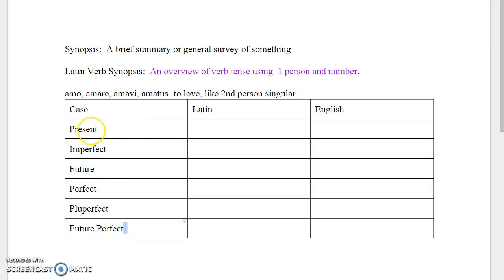So let's start with our present system verbs of present, imperfect, and future. For that we look at the second principal part of the word amare and we're going to use that stem to create our word which is in the second person singular amas. In the imperfect we have amabas. In the future we have amabis.